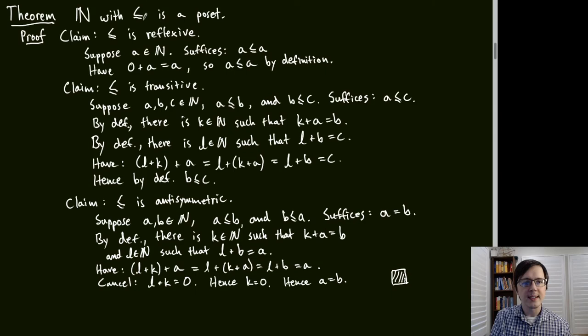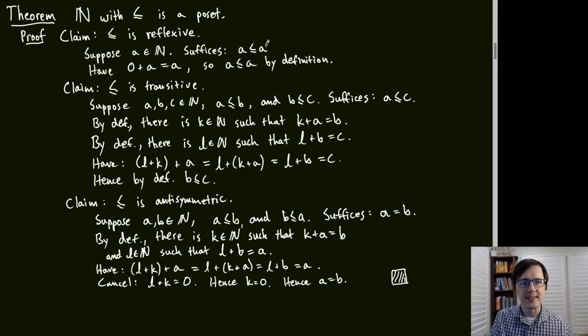As an exercise, let's show that ≤ gives ℕ the structure of a POSET. For reflexivity: given a natural number A, we need A ≤ A. By definition of ≤, we need to add something to A to get A, and adding 0 works. So it's true by definition using zero.